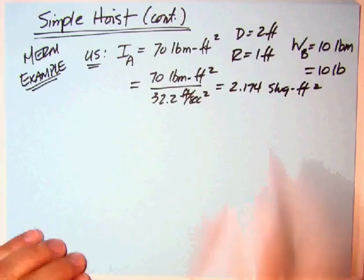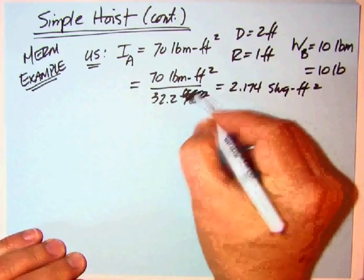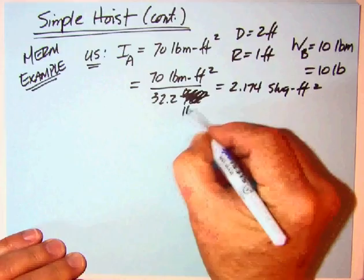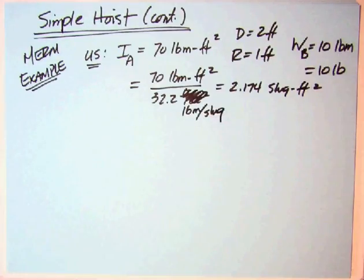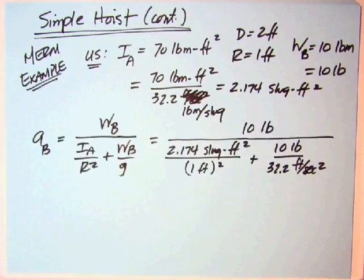32.2 pound mass per slug, so we got slug foot squared. That's what you want I in. Now let's take that information and put it into our acceleration of B equation.